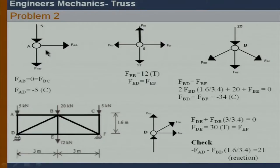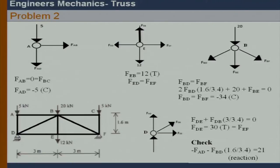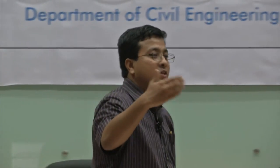Another truss problem using method of joints. We follow the same logic — starting from a joint with two unknown member forces, finding those forces, then moving joint by joint to find all member forces.